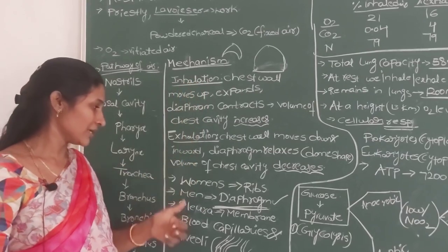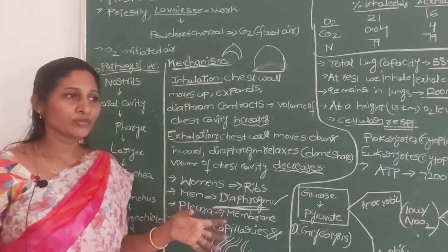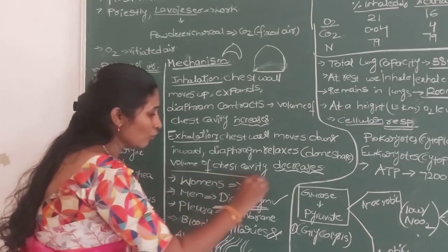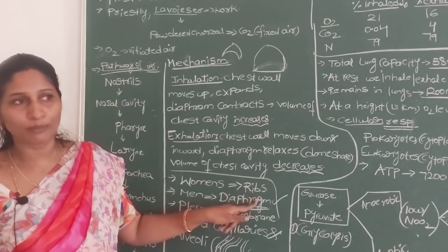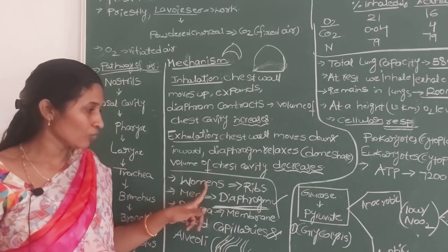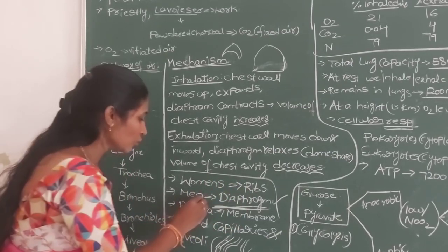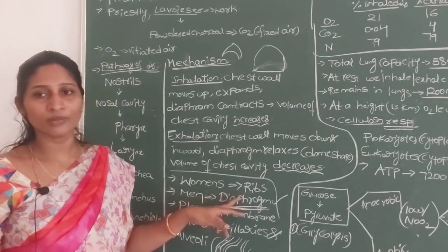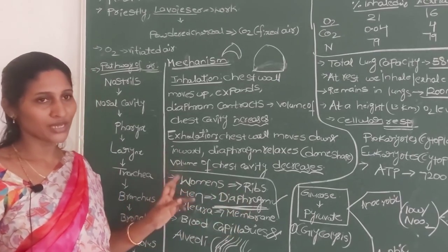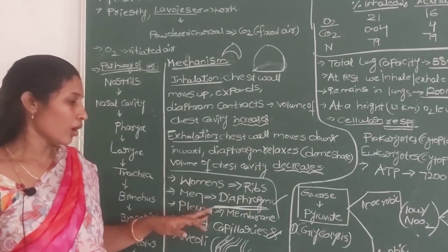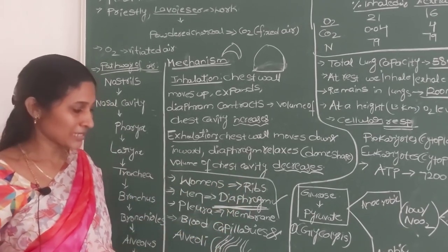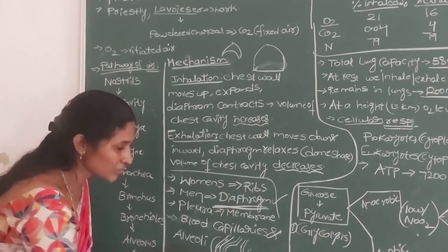Regarding ribs: in women, ribs play a major role during the respiration mechanism, whereas in men, the diaphragm plays the major role during respiration. The pleura is the membrane surrounding the lungs.